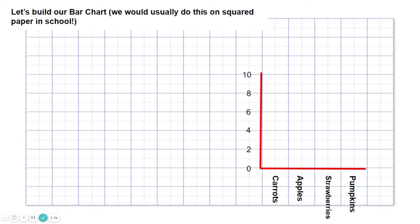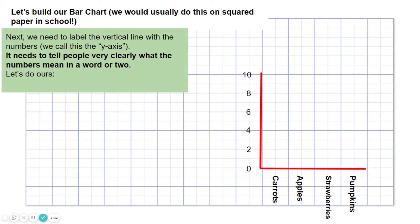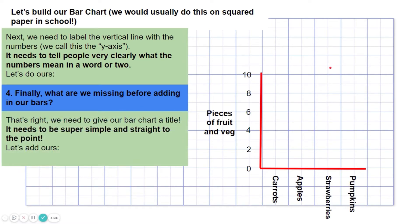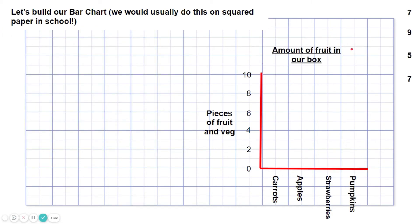Okay, so moving on, we've got to label the vertical line, which is called the y-axis. It needs to tell people very clearly what the numbers mean in a word or two. Really simple. So let's do ours here. Let's go for pieces of fruit and veg. Simple. Finally, what are we missing before adding in our bars? A title up here. So let's add one in. It needs to be super simple and straight to the point. Amount of fruit in our box. There we go.